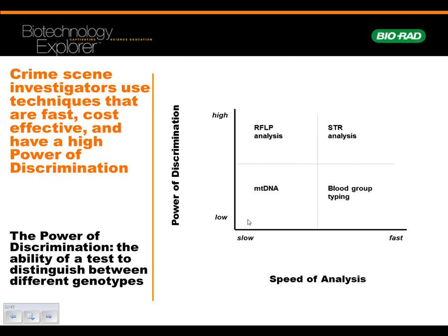They also have to factor in what they call the power of discrimination — in other words, how can we effectively test to verify that this sample is definitely from suspect A and not from somebody else around the world who might have the exact same DNA. This STR analysis is relatively fast and has a high power of discrimination. Power of discrimination can really be done by math, and that's what I'm going to show you.